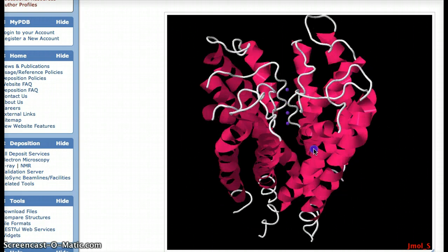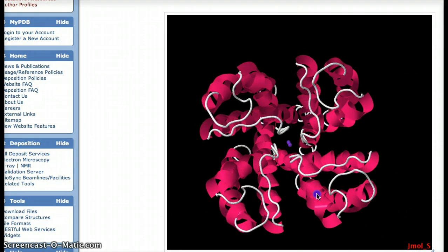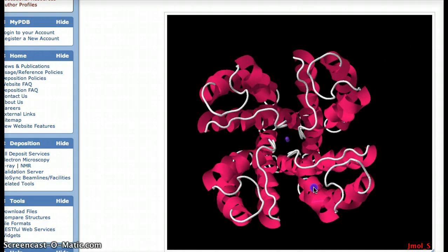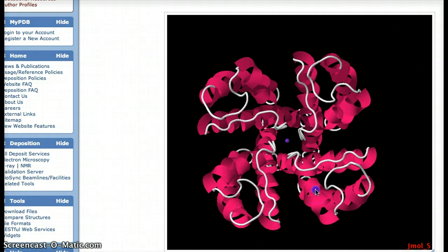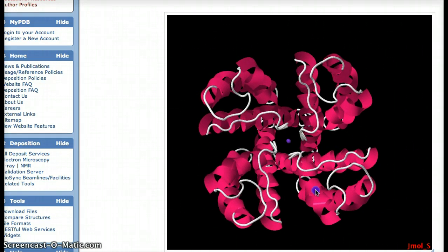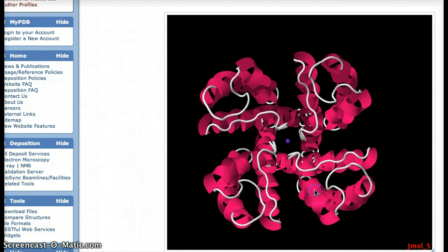The function of the potassium channel is to allow potassium ions to flow through it. So, as you can see, there's a channel right through there, through the alpha helices.